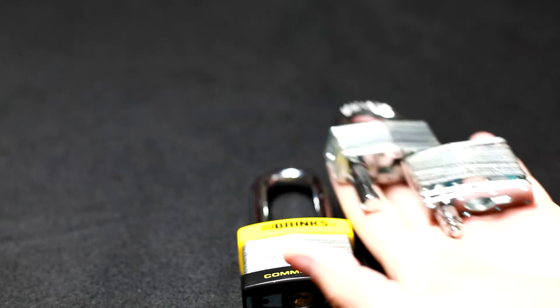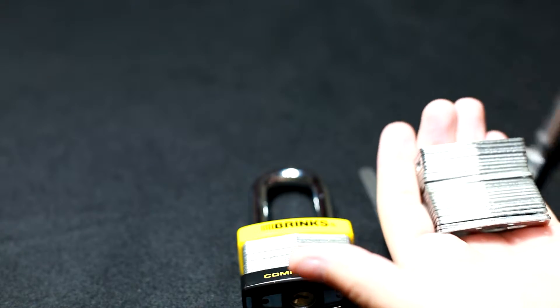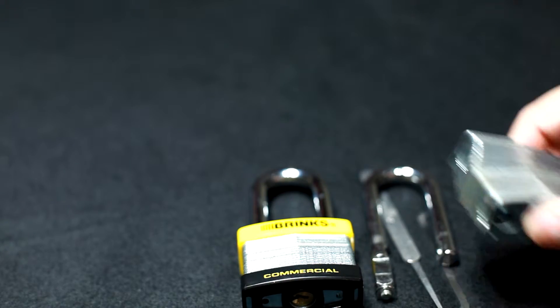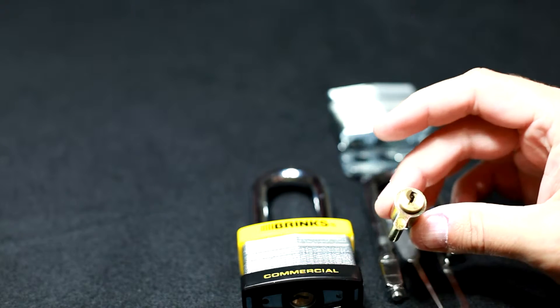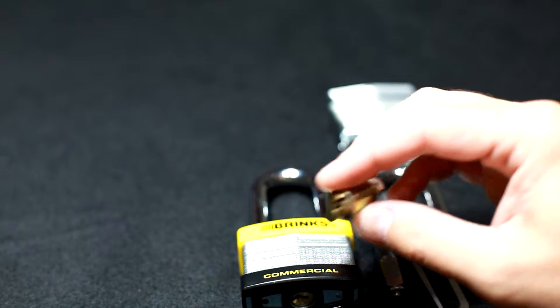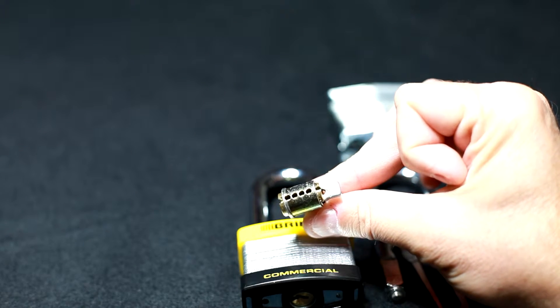And to prove that, here is the old Brinks commercial lock. I've opened it up and here's the keyway, the lock cylinder, and as you can see there's only four pins, not five.